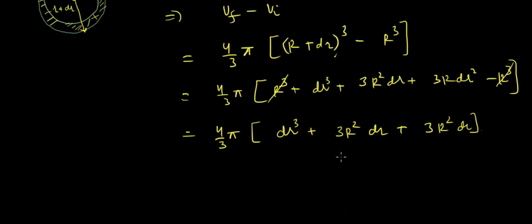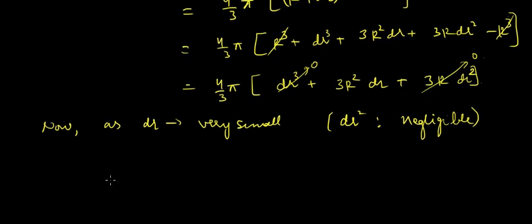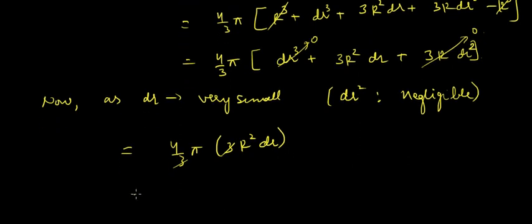Now, as dr is very small, we can consider dr² and dr³ as negligible, so what we are left with is 4π r² dr.